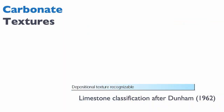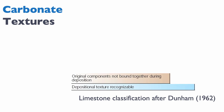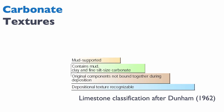If we can recognize the depositional texture, the next question is: were the original components bound together at time of deposition? In other words, are we looking at something like a coral reef, or loose sediments? Assuming it's loose sediments — not bound together at time of deposition — the next question is whether or not they contain mud, micrite. If they have either clay or fine silt carbonate, then that leads us to the next question: is the rock mud supported?